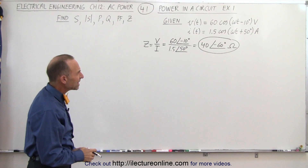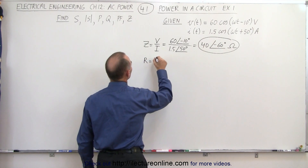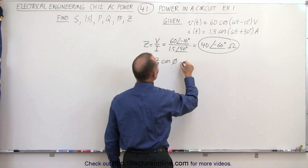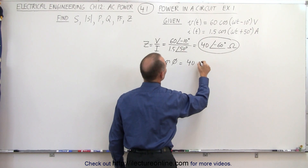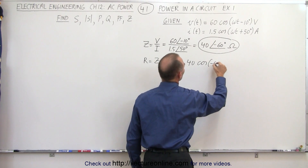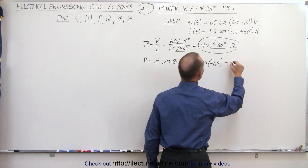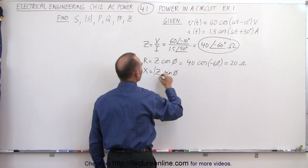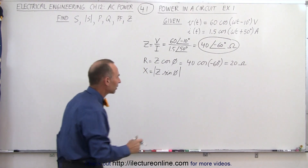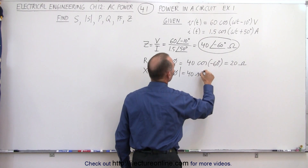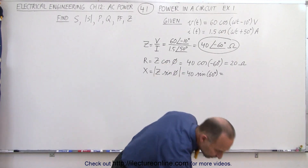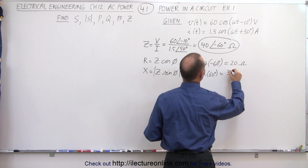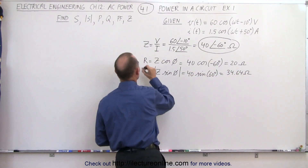If we want to know the resistance and the reactance of the circuit, we can find that. The resistance is equal to the impedance Z times the cosine of the phase angle. The phase angle is minus 60 degrees, so that is equal to 40 — the magnitude of the impedance — times the cosine of minus 60 degrees, which is the same as the cosine of 60 degrees, which gives us 20 ohms. And the reactance X would be equal to Z times the sine of phi — the magnitude of that — which is equal to 40 times the sine of 60 degrees, giving us 34.64 ohms.